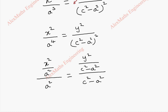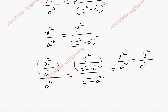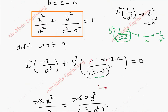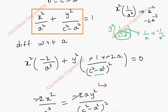We use the ratio property: we can add the numerators x² / a² + y² / (c² - a²) and write it as a separate ratio. Adding the denominators gives a² + (c² - a²) = c². The numerator x² / a² + y² / (c² - a²) equals 1 from the original ellipse equation. So the entire combined ratio becomes 1 / c².